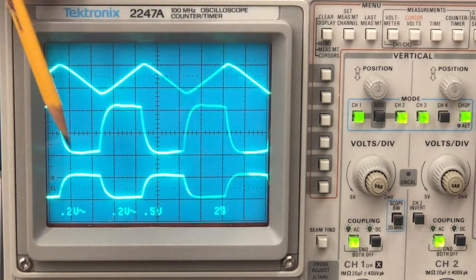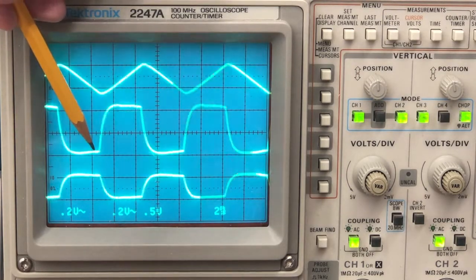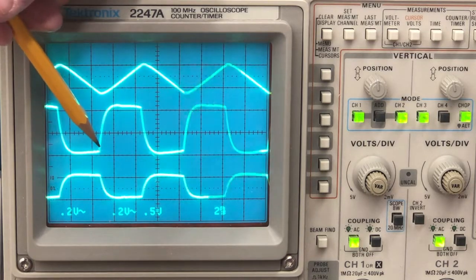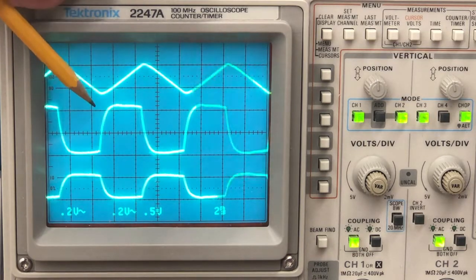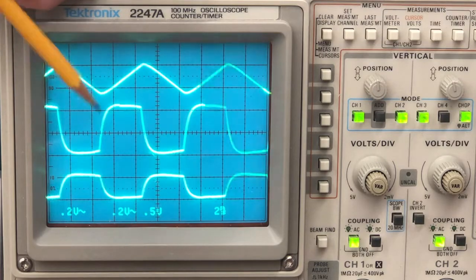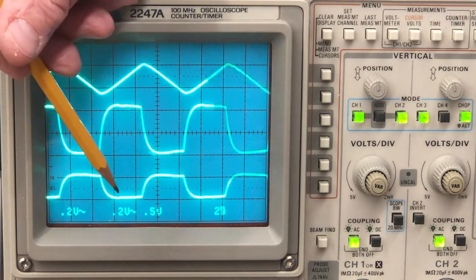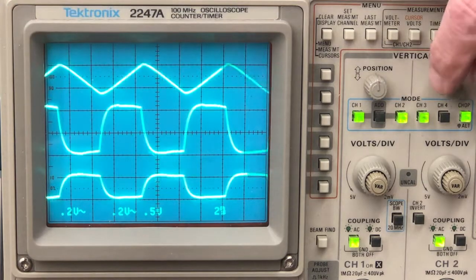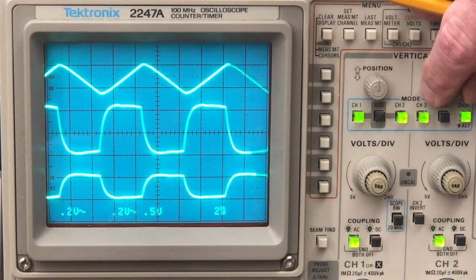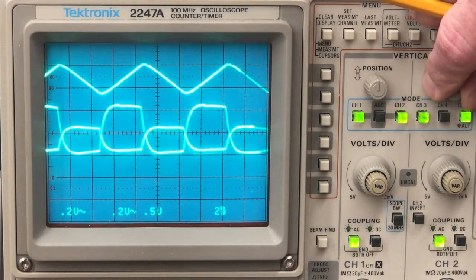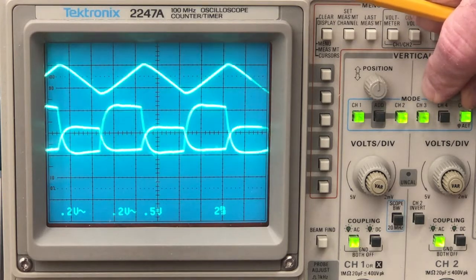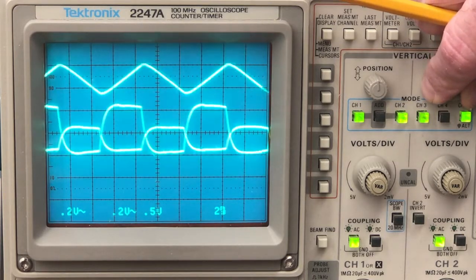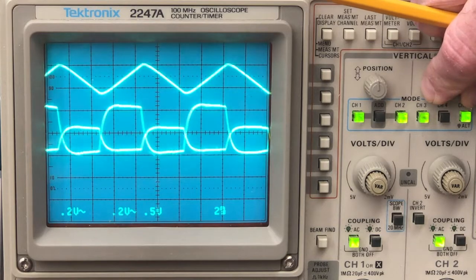If you look at where we are on the screen, channel A is 1, 2 units high. Channel B is 1 unit high. I can position their baselines a little bit on top of each other so that you can see that these guys are actually 2 to 1.